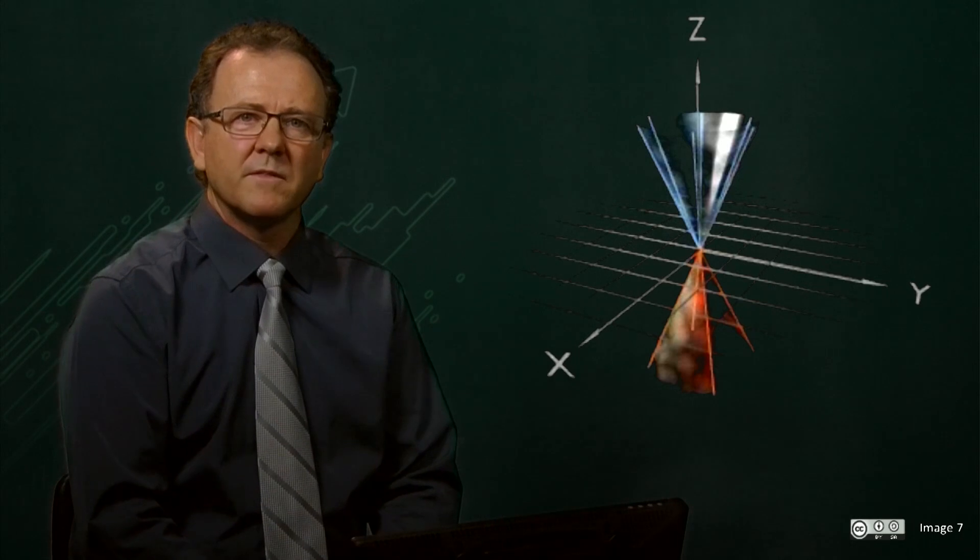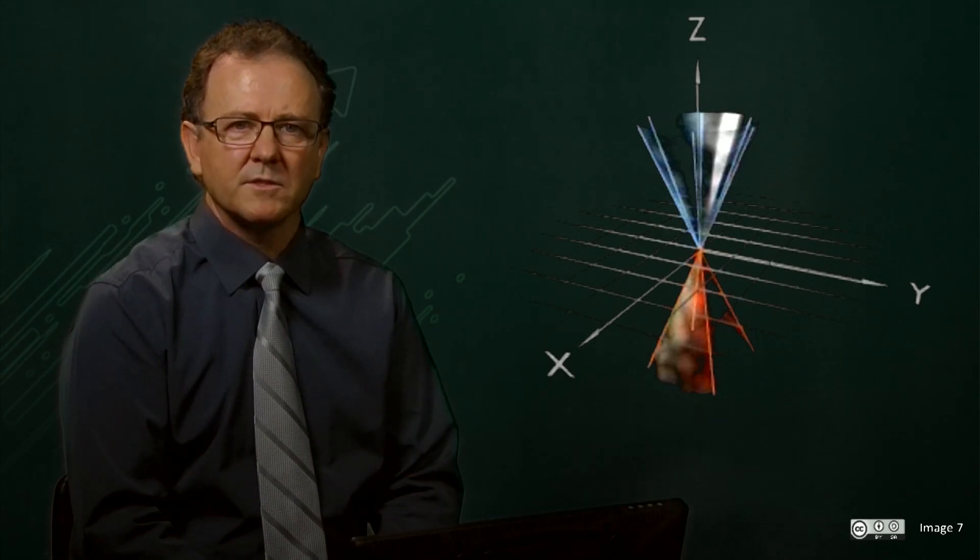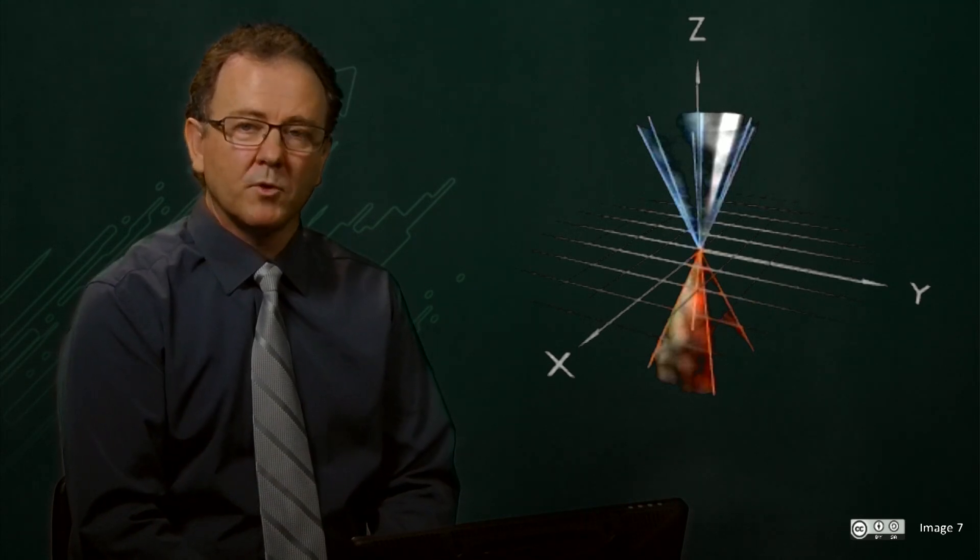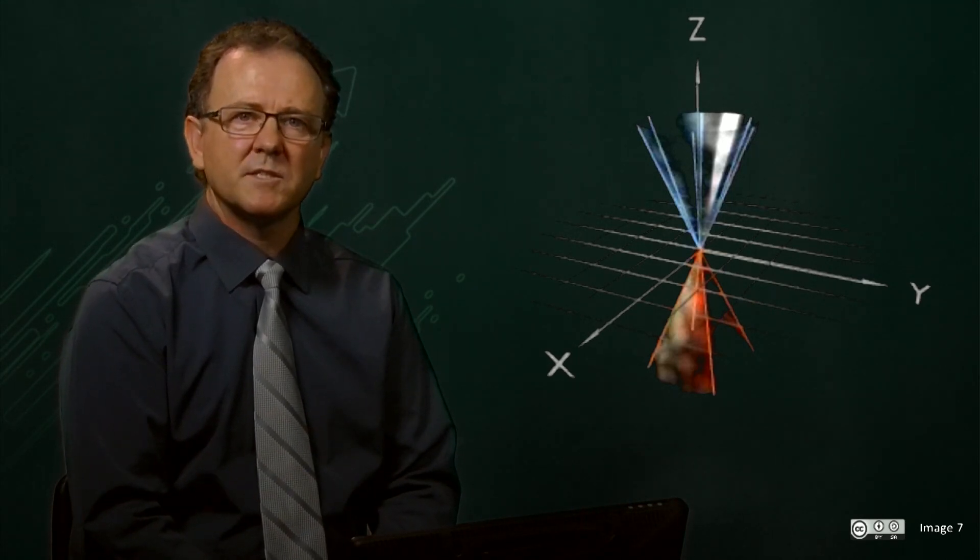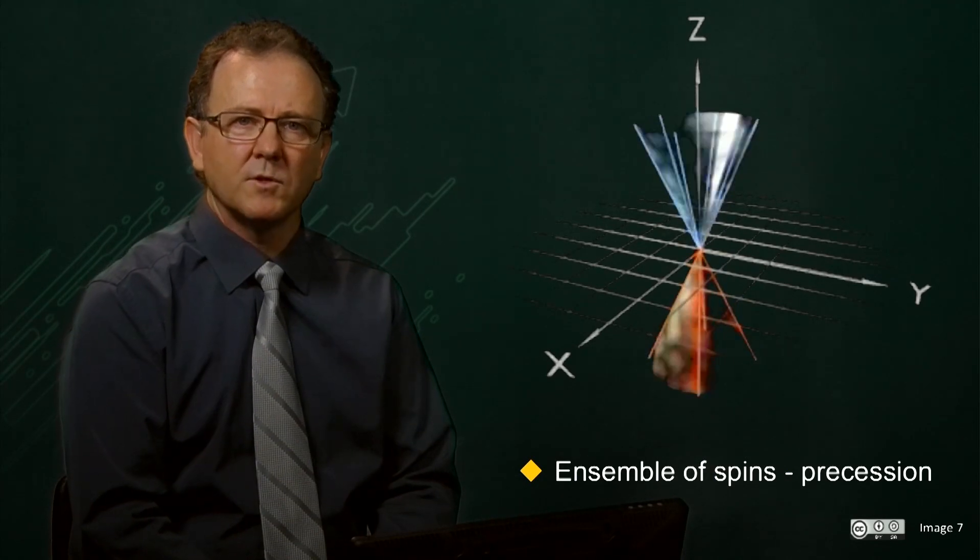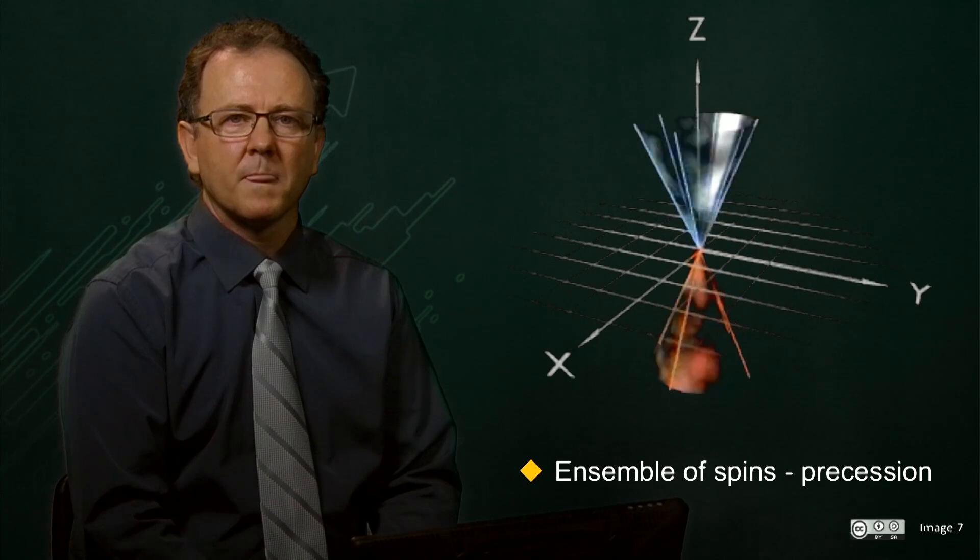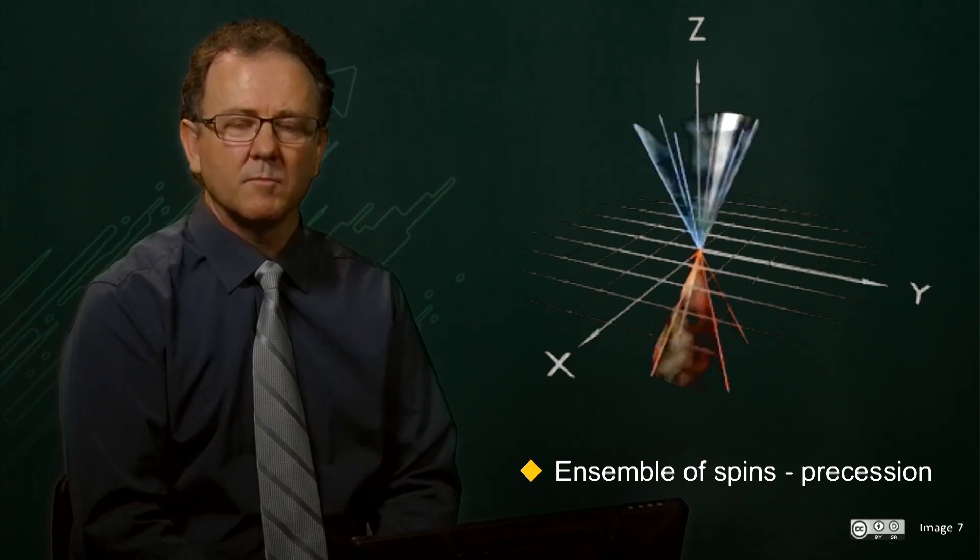So we can now represent the magnetic moments in the presence of a field as a collection of vectors, some pointing up, fewer pointing down and they precess about the direction of the magnetic field, which we say is in the Z direction. The rate of this precession is the Larmor frequency.